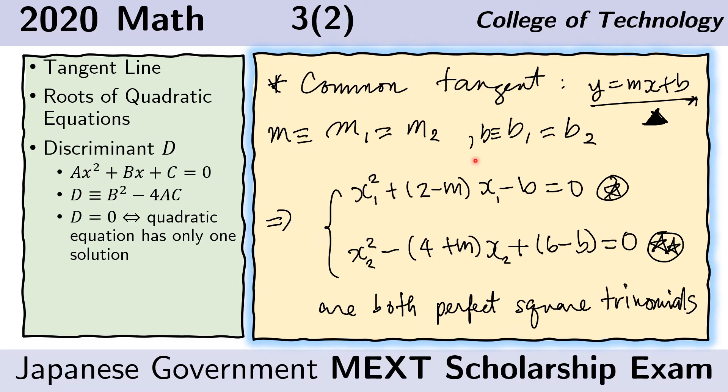Next, we impose the condition that both tangent lines must be the same. That means that the slopes must be the same. Let us call that slope m. m must be equal to m sub 1 and m sub 2. In the same way, the y-intercepts must be the same. Let us call that y-intercept b and it must be equal to b sub 1 and b sub 2.